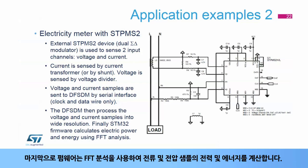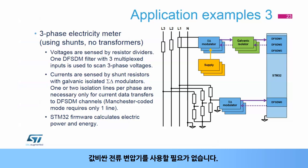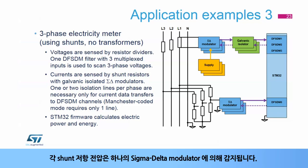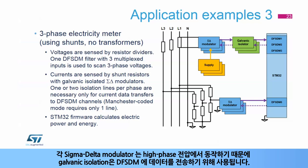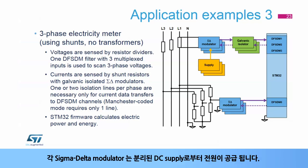The firmware uses FFT analysis to calculate the electric power and energy from the current and voltage samples. A three-phase electricity meter design using shunt resistors for sensing current requires no expensive current transformers. Voltages are sensed by three resistor dividers and external Sigma-Delta modulators, while currents are sensed by three shunt resistors, each sensed by one Sigma-Delta modulator. Because each Sigma-Delta modulator operates at a high-phase voltage, galvanic isolation is used. If the Manchester-coded serial protocol is used with an internal clock source, only one isolator per phase is necessary; if SPI serial format is used, two isolators per phase are required.